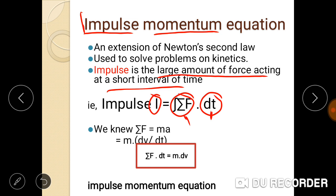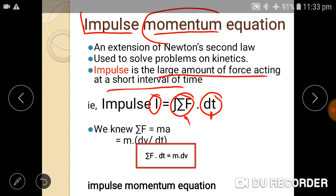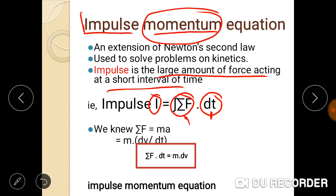Now, momentum: momentum p is equal to mass times velocity. So momentum is simply the product of mass and velocity of a body.